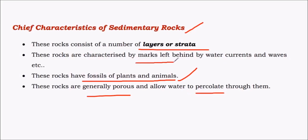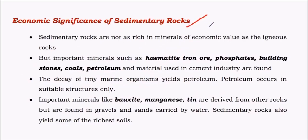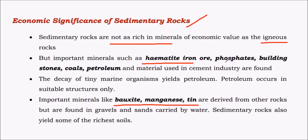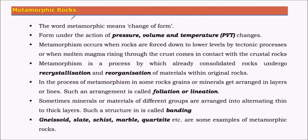Sedimentary rocks also have marks left behind by mechanical agents like wind, water, and glacial action. Regarding economic significance, sedimentary rocks are not as rich in minerals as igneous rocks; they contain few metallic ores like hematite (iron ore), bauxite, and manganese, and mostly non-metallic minerals like phosphates, nitrates, and organic minerals like coal and petroleum. Most importantly, sedimentary rocks give rise to the richest soils, facilitating agriculture — for example, sediments carried by the Ganga and Brahmaputra gave rise to the highly fertile Ganga Plains.